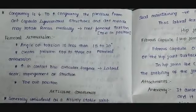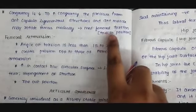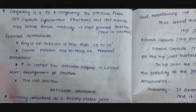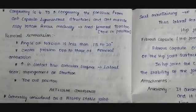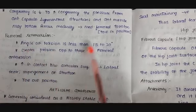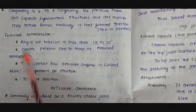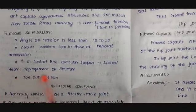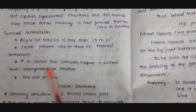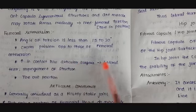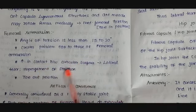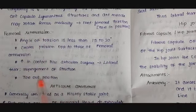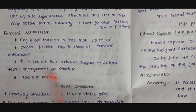A person with femoral anteversion will walk in a toe-in position, with their toes pointing inward. Femoral retroversion is the opposite — the angle of torsion is less than 15 to 20 degrees — and creates problems opposite to those of femoral anteversion. The contact area between the articular surfaces increases, which may result in labral tear and impingement. To reduce hip pain, people with femoral retroversion will walk with a toe-out position, with their toes facing outward.